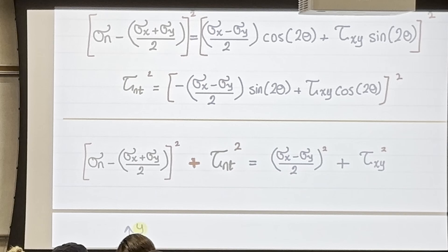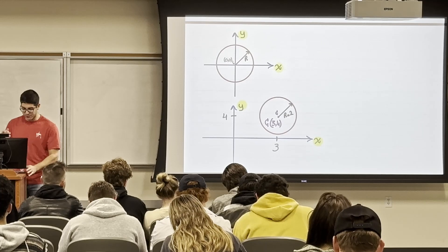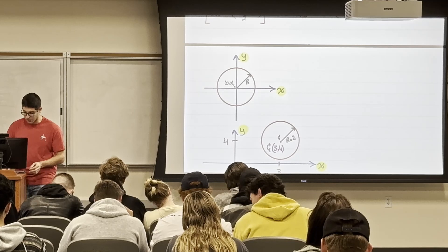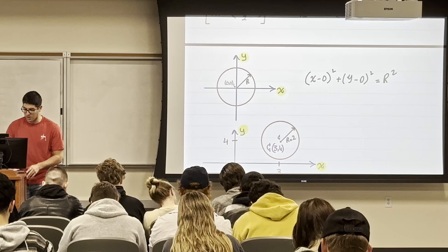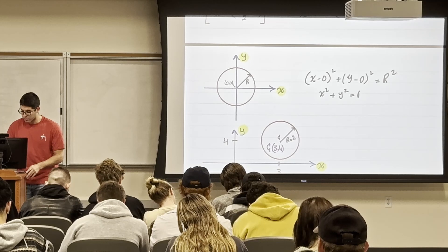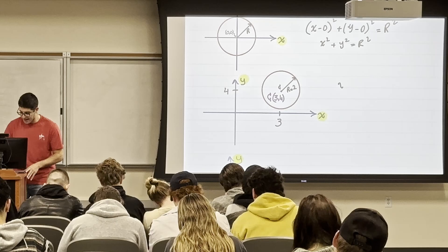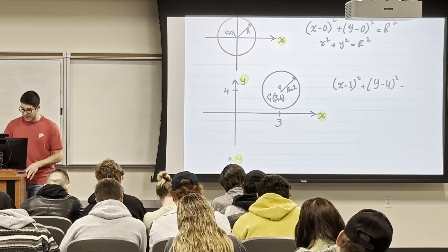This equation is basically a circle. To remind you: for a circle centered at the origin, x² + y² = r². If the circle is centered at (3, 4) with radius 2, the equation becomes (x−3)² + (y−4)² = 4. Mohr's Circle is similar but it's shifted only along the x-axis — not up or down — so there's no shift in y.